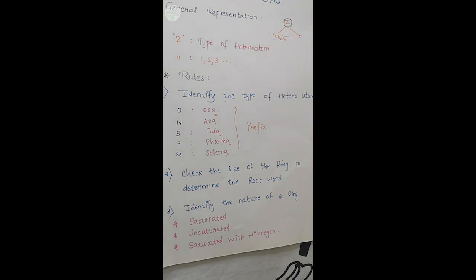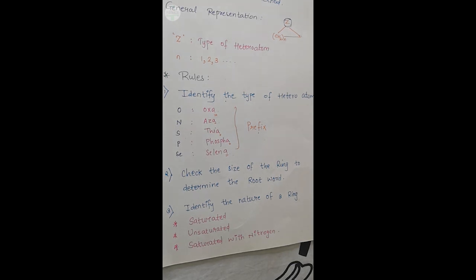And एक बहुत important condition है — saturation with nitrogen. यानि कि रिंग में अगर nitrogen है और सारे single bonds हैं, तब आपको अलग treatment करना है. So nature of a ring तीन type का हो सकता है: saturated (only single bonds), unsaturated (partial or complete — with complete being aromatic with alternate single and double bonds), and the third is the ring completely saturated but with nitrogen as one of the ring elements. These are certain rules with the help of which we can write names of heterocyclic compounds. I will be giving you a table, और वो table से आप determine कर सकते हो कि prefix क्या use करना है, root word क्या use करना है, और वो use करके हम heterocyclic compounds के नाम लिखेंगे.